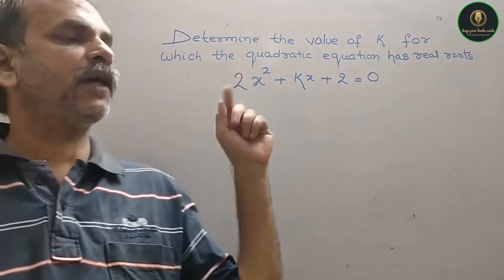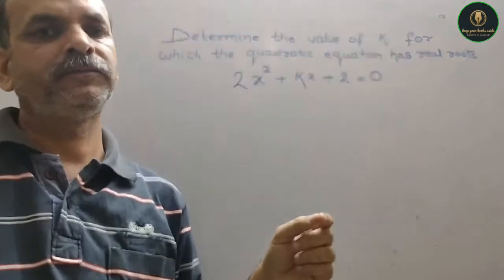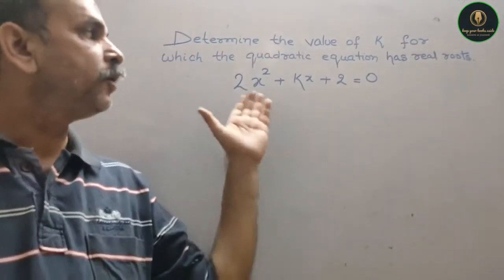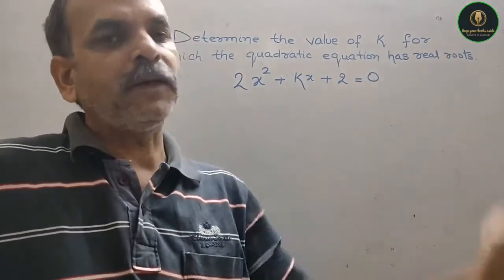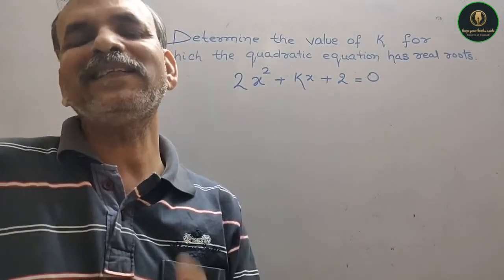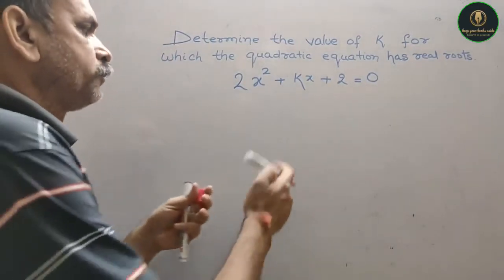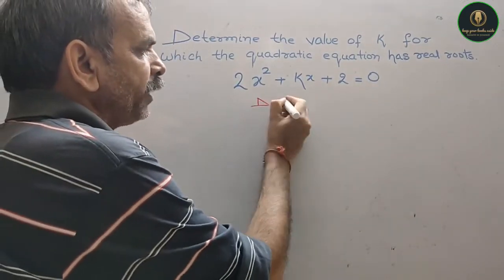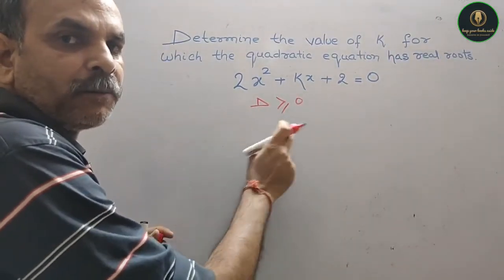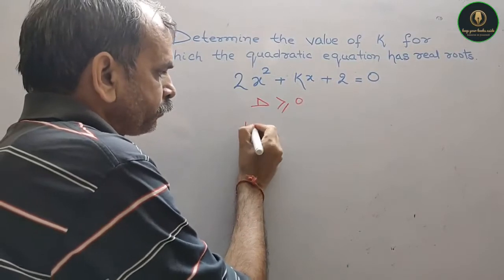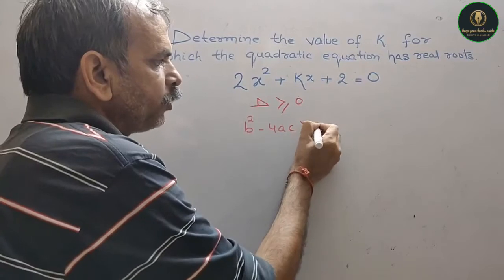Your question: determine the value of k for which the quadratic equation has real roots. 2x² plus kx plus 2 is equal to 0. Now, real roots occur when the discriminant is greater than or equal to 0. So discriminant should be greater than equal to 0.